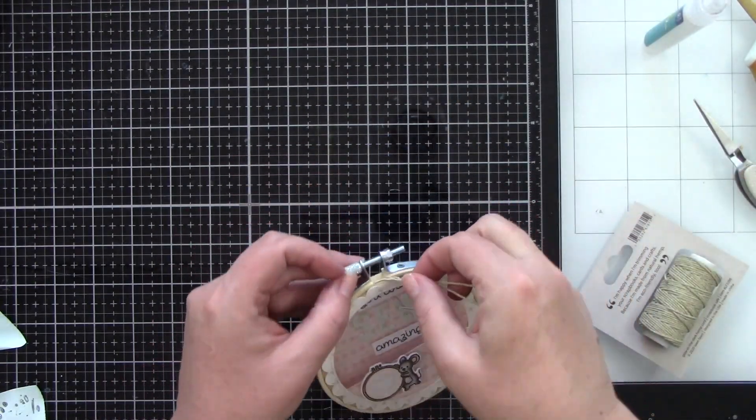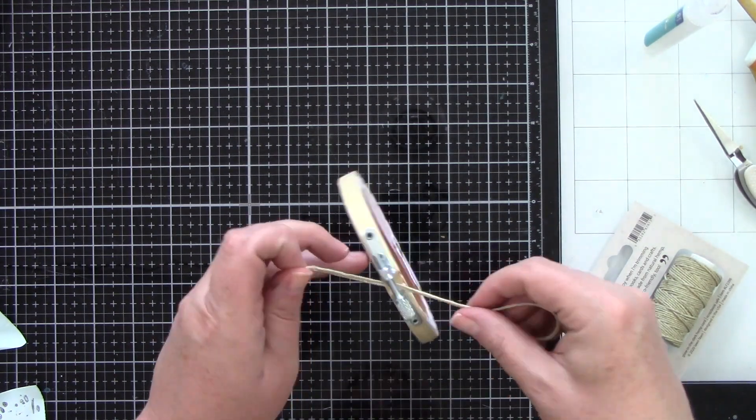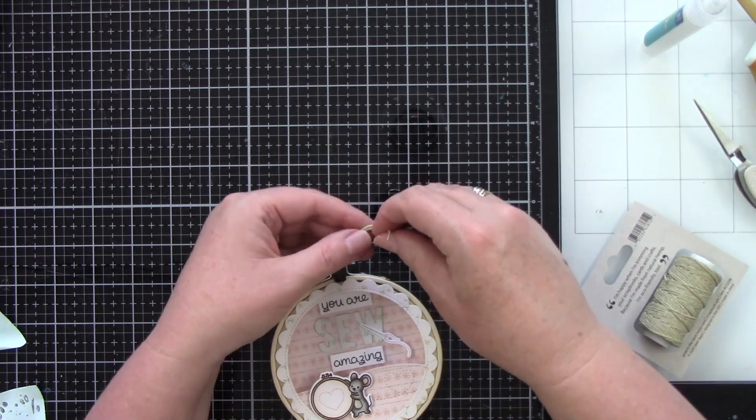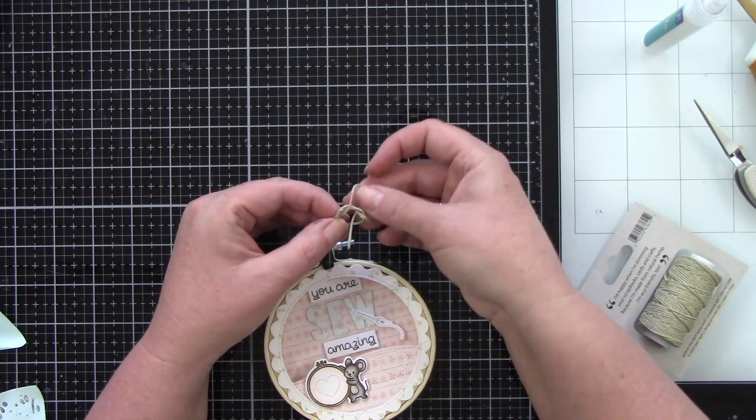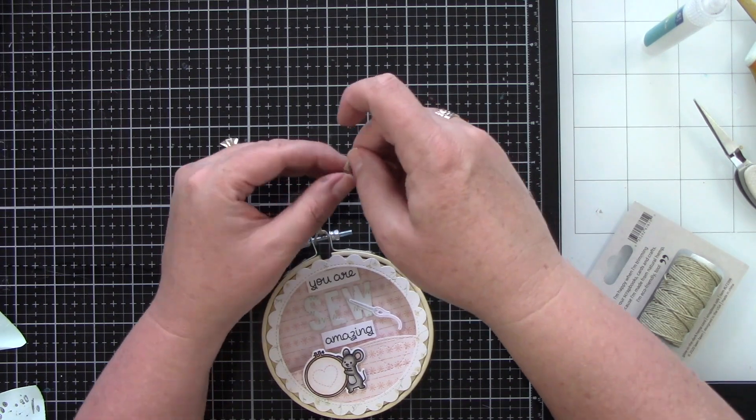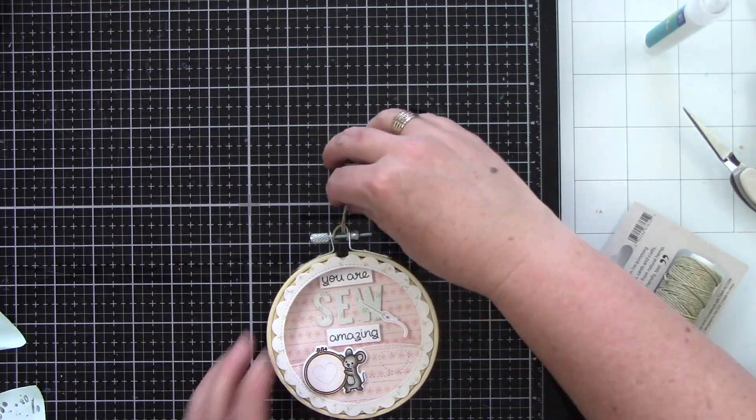I'm actually using the glow in the dark hemp cord. Obviously not because it's glow in the dark but because the natural look of it was so perfect. So someone could hang this on their wall or whoever you decide to give this to or if you're going to keep it for yourself because you are a sewer. But it is so cute.